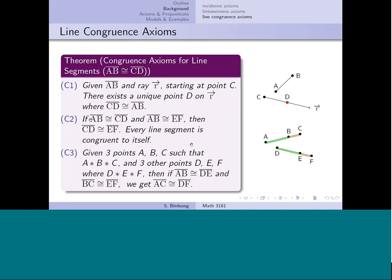The second congruence axiom was purely logic — it dealt with how you can manipulate your congruence equations. If AB is congruent to both CD and EF, then all three line segments are congruent to each other, and every line segment is congruent to itself. The third congruence axiom can be rewritten using a distance formula: if you have three points A, B, and C, then the distance from A to B plus the distance from B to C equals the distance from A to C. You need the distance formula in your model to use that.